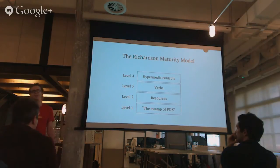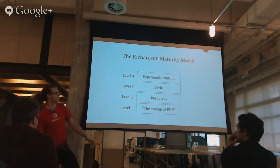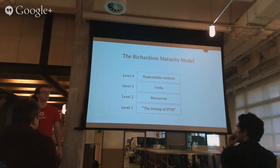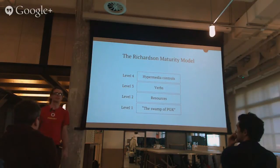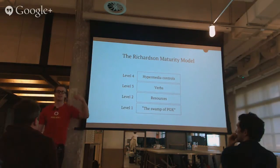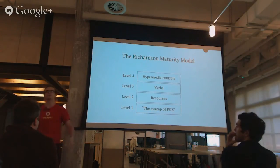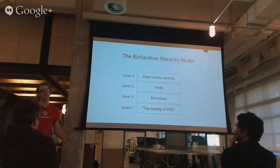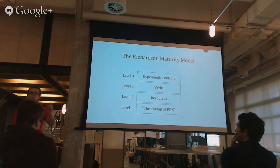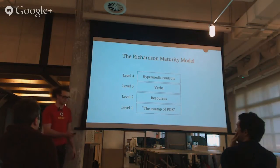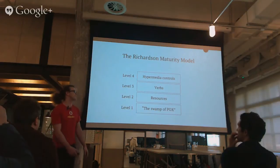Level one is sort of the good old 90s — the swamp of POX, or plain old XML. You have a single API endpoint, like http://myapi.com, and you post blobs of XML to it: get this customer, save this customer. There's a massive request — SOAP, or something like that. It's a mess. You can't split it out because there's just one endpoint where you're posting XML to. It's not a very pleasant world.